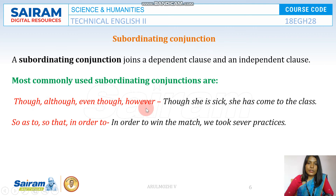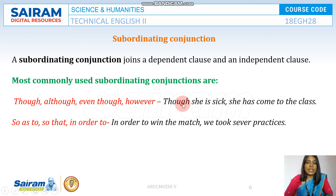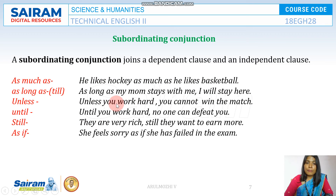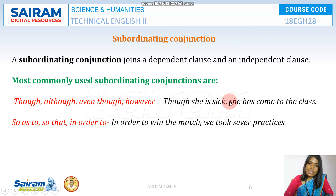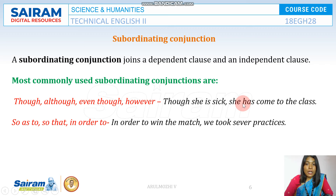Examples of subordinating conjunctions include: though, although, even though, however. These conjunctions can be used at the beginning, in the middle, or at the end of a sentence. For example, "Though she is sick, she has come to the class" or "She is sick, though."